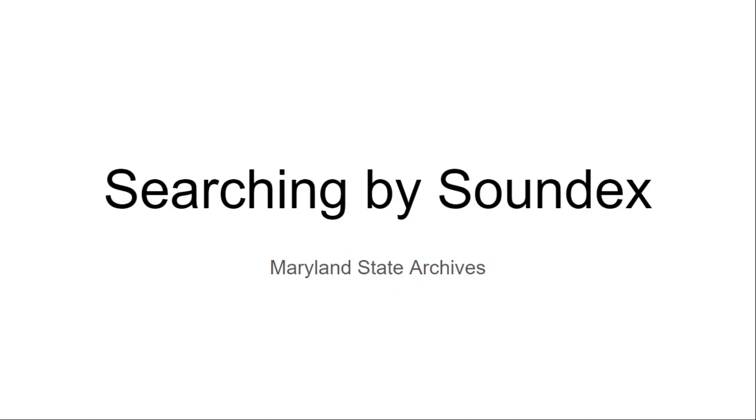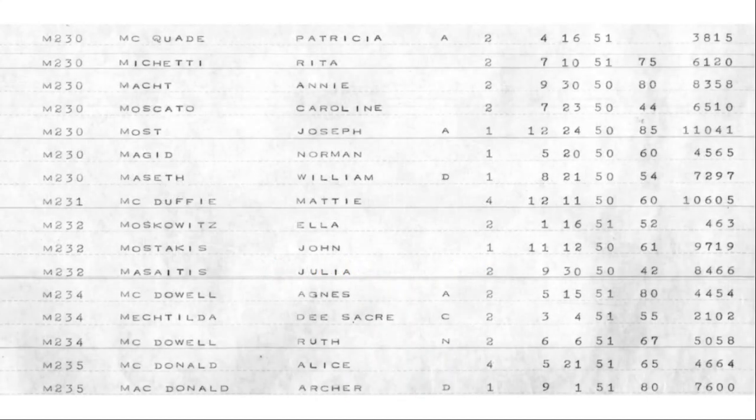When you are searching Maryland's indexes to historical vital records, you will come across a variety of index styles. If you are searching vital records from the 1950s through the 1970s, you may come across an index style called Soundex. This index style is organized by the codes you see on the left, rather than alphabetically by last name.